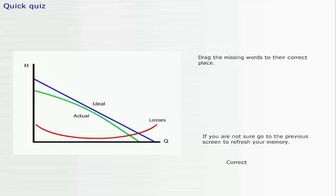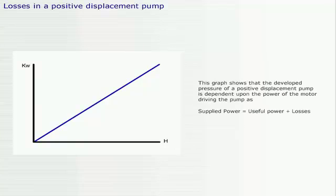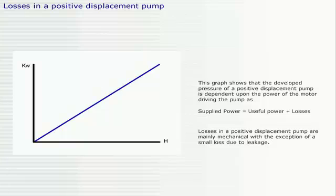This graph shows the developed pressure of a positive displacement pump is dependent upon the power of the motor driving the pump, as supplied power equals useful power plus losses. Losses in a positive displacement pump are mainly mechanical, with the exception of a small loss due to leakage.